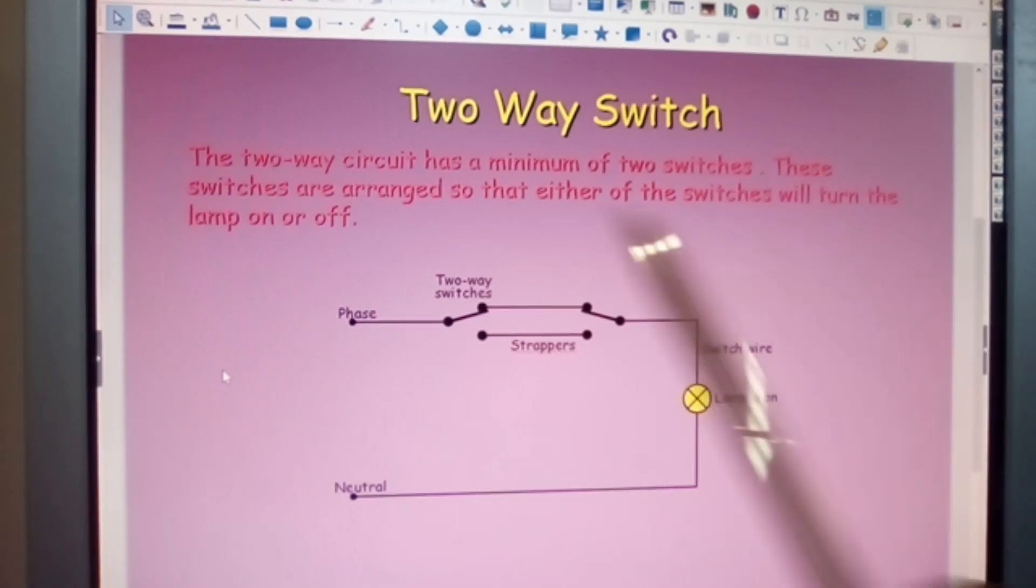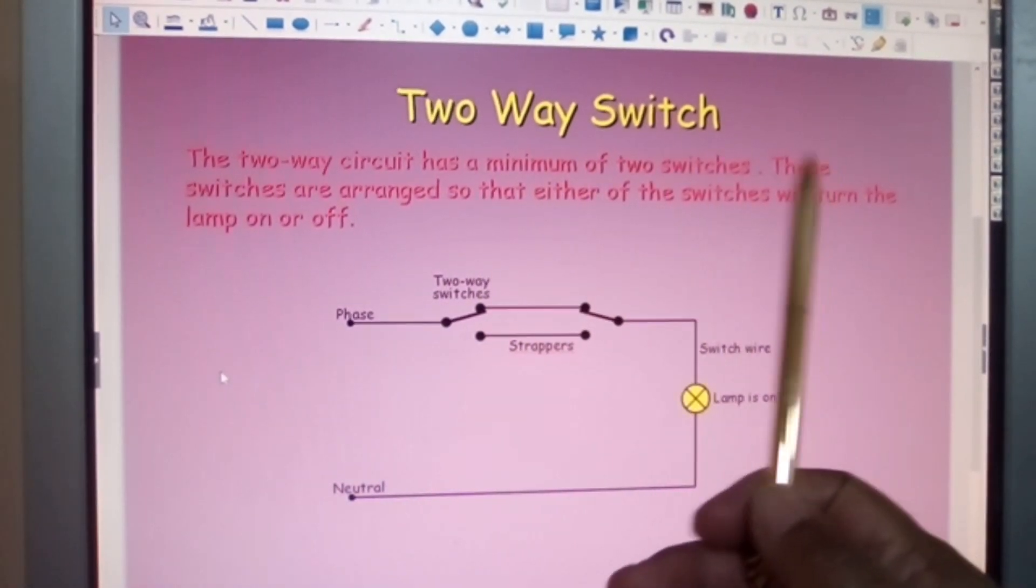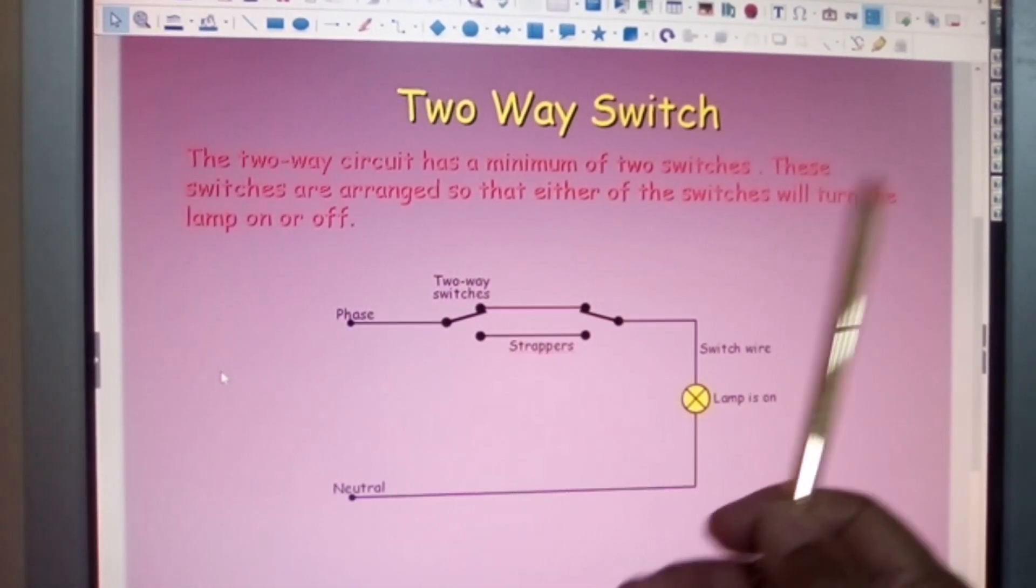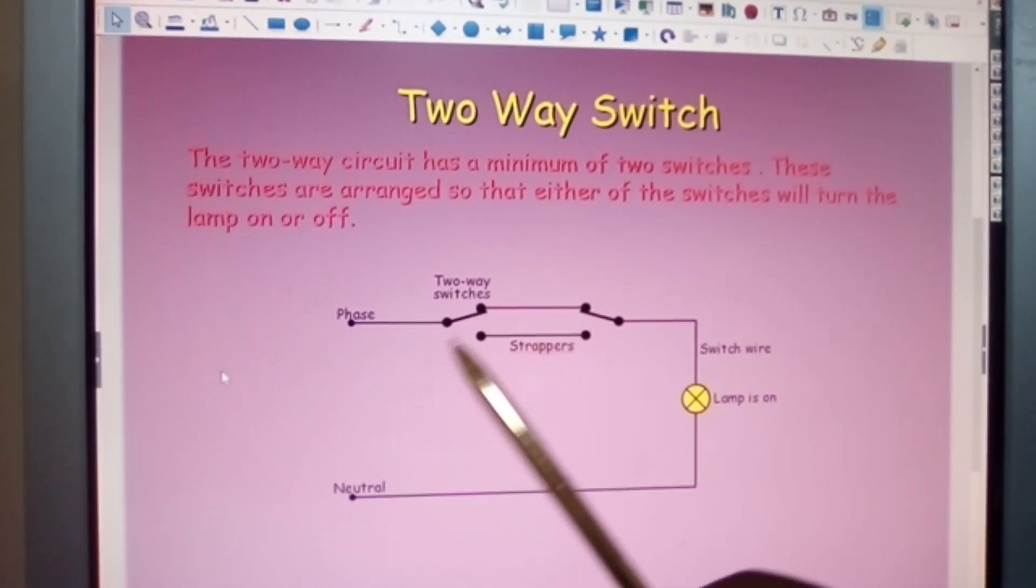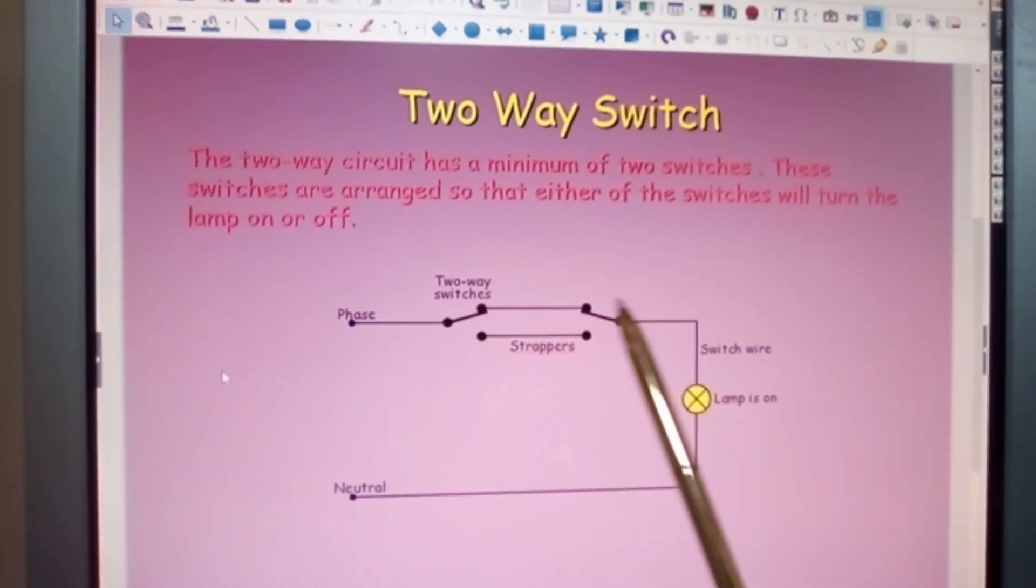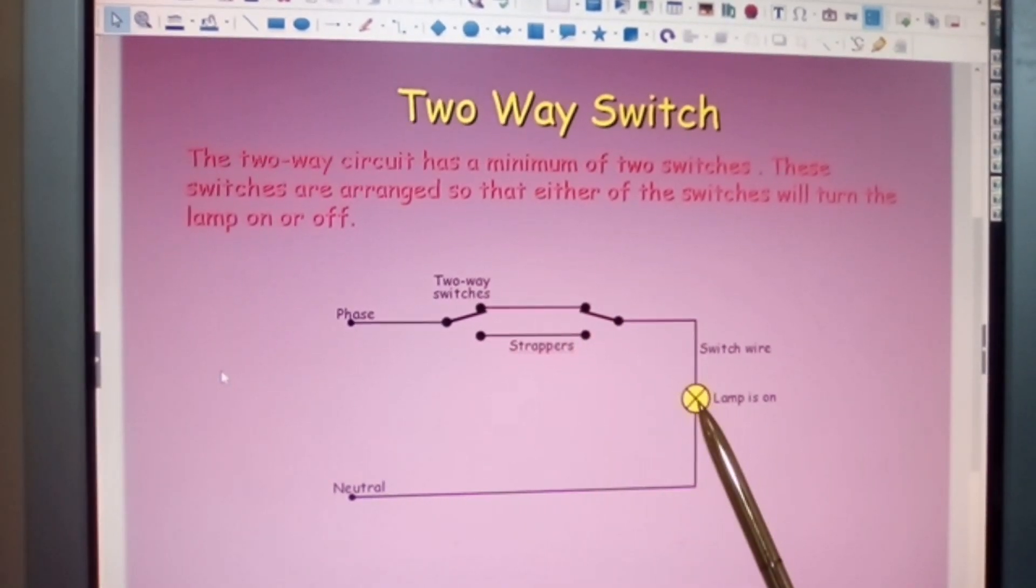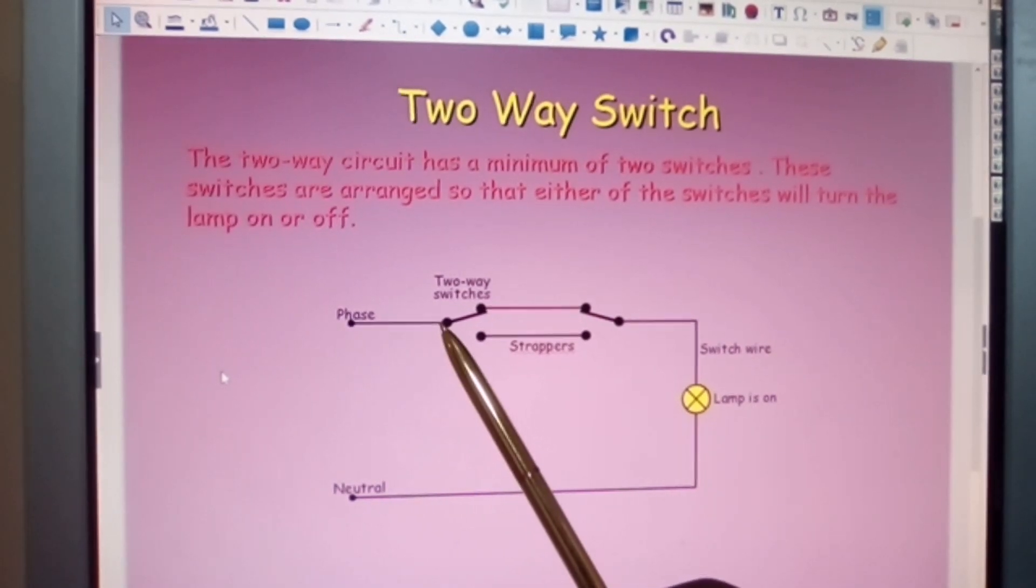Now the two-way switch circuit has a minimum of two switches. These switches are arranged so that either of the switches will turn the light on or off. This switch could be at the top of the stairs. This switch could be at the bottom of the stairs. So you can put on the light on the stairs. And you will notice that the phase conductor is in the right position. It is not in the neutral conductor.